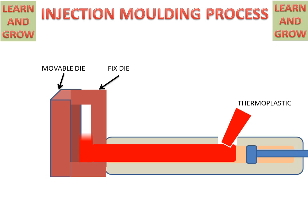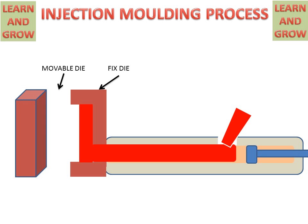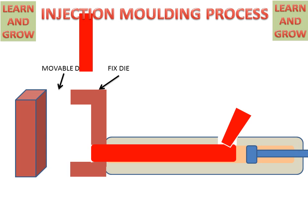The die will be filled with the molten metal. After some time, the movable die will be opened and the final product will be removed from the die.